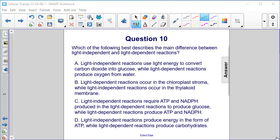C. Light-independent reactions require ATP and NADPH produced in the light-dependent reactions to produce glucose, while light-dependent reactions produce ATP and NADPH.